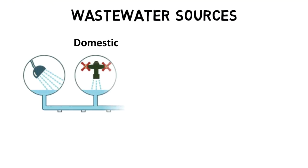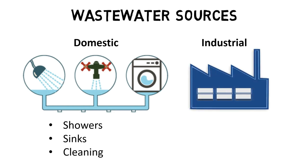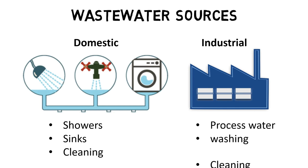Domestic use produces sewage from showers, sinks, cleaning appliances and flushing toilets. Industrial and agricultural wastewater comes from water usage for various processes and the washing and cleaning of products.